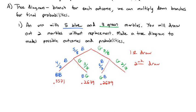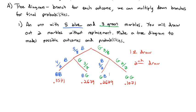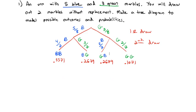The last track is going down green and then green. So if we want two green marbles, we multiply three-eighths times two-sevenths to get 0.1071. Now we see all the different possible probabilities for drawing two marbles out of this urn without replacement.